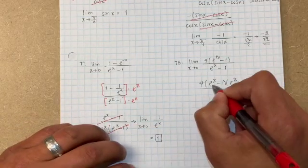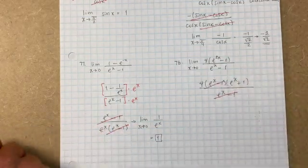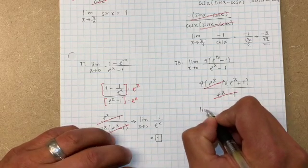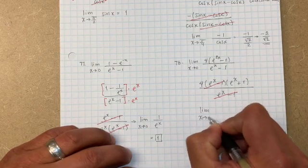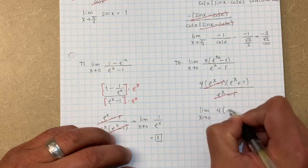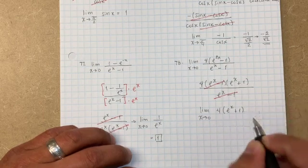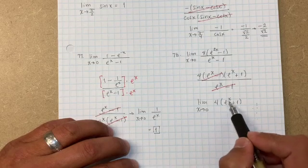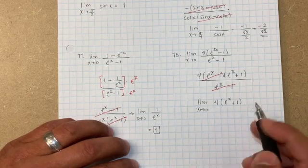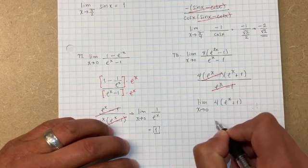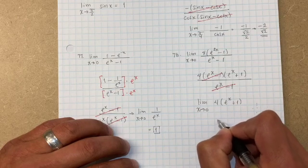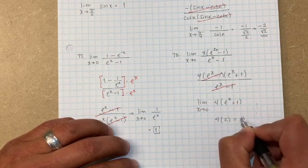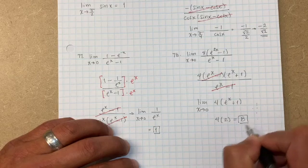And then what do you notice? The (e to the x minus 1) factors cancel out. So you have the limit as x approaches zero of 4 times (e to the x plus 1). Now let's plug in zero: e to the zero is 1, and 1 plus 1 is 2. So you end up with 4 times 2, which is 8. And there it is.